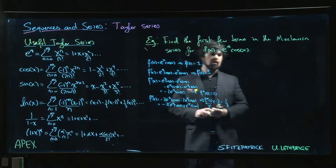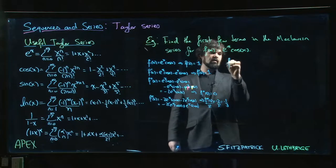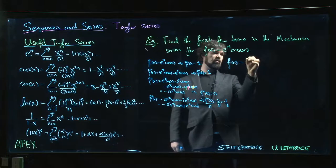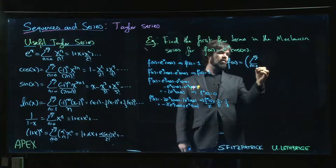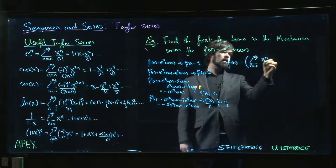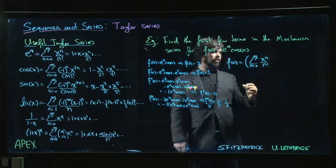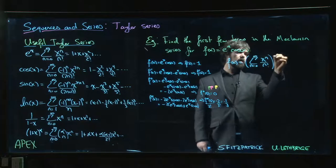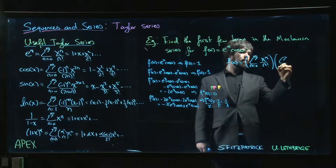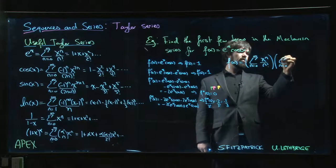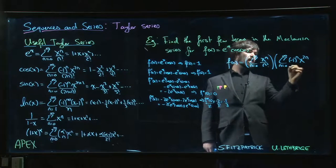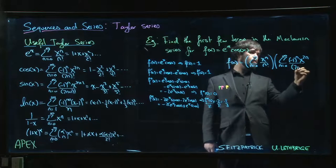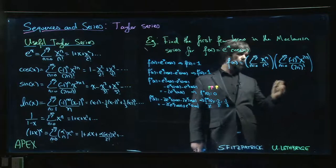And so the other way you can do this is you can say, well, look, f of x is e to the x cos x, but e to the x is the sum n going from 0 to infinity, x to the n over n factorial, okay? And then we have the sum n going from 0 to infinity minus 1 to the n x to the 2n over 2n factorial, okay?